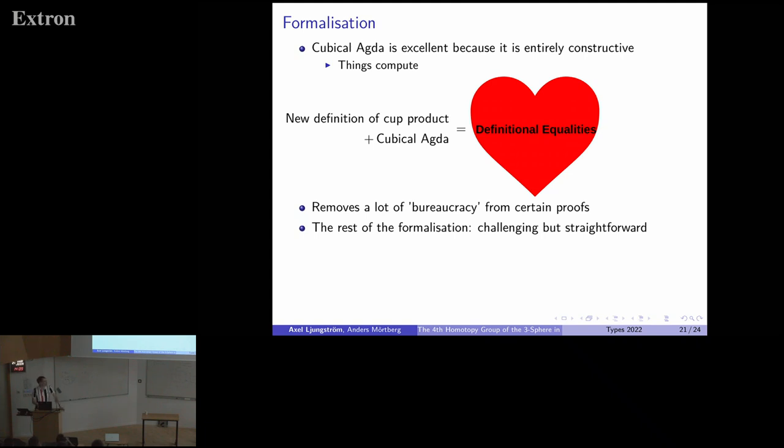When we had this cup product, the rest of the formalization was challenging for sure. It took a lot of time, but it was straightforward, I would say. Guillaume's proof turned out to be correct, so we're very happy about that too. A few lines of code later, we have the result. Pi 4 of S3 is Z mod 2, completely formalized in cubical Agda.